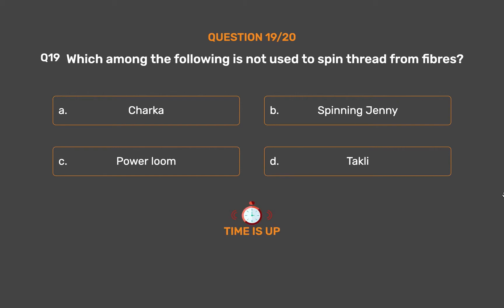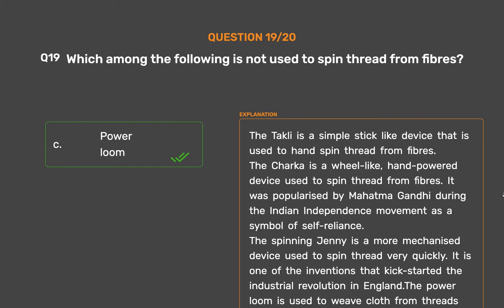The correct answer is Option C, Power loom. The Takali is a simple stick-like device used to hand spin thread from fibers. The Charka is a wheel-like, hand-powered device used to spin thread from fibers, popularized by Mahatma Gandhi during the Indian independence movement as a symbol of self-reliance. The Spinning Jenny is a more mechanized device used to spin thread quickly and was one of the inventions that kick-started the industrial revolution in England. The power loom is used to weave cloth from threads, not to make threads from fiber.